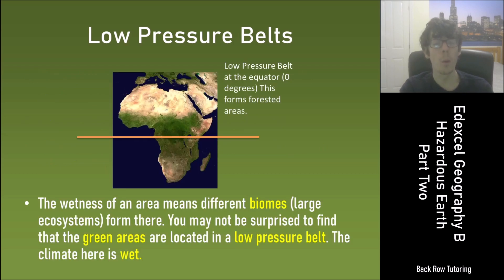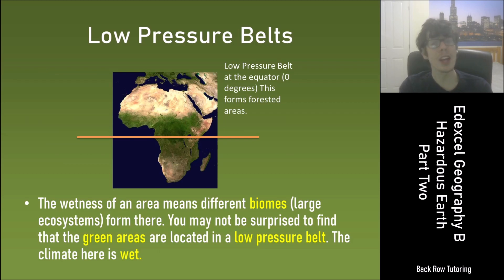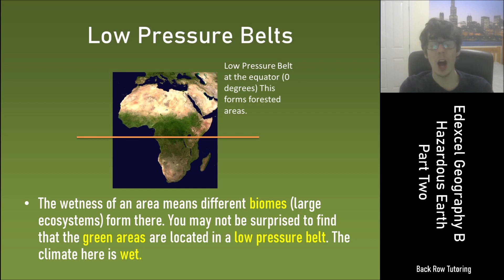The wetness of an area means different biomes, which are just large ecosystems, form. You may not be surprised to find that the green areas on this map of Africa are located in a low pressure belt. The climate there is wet.